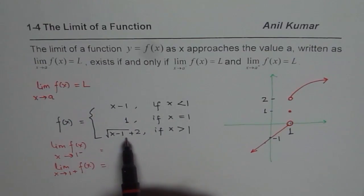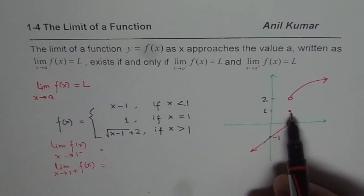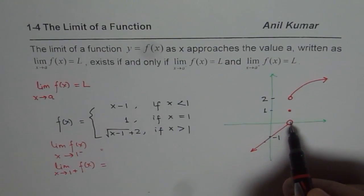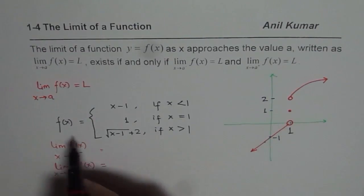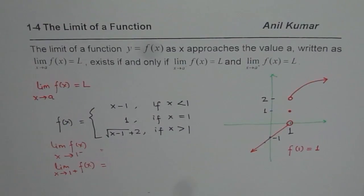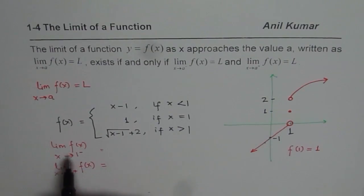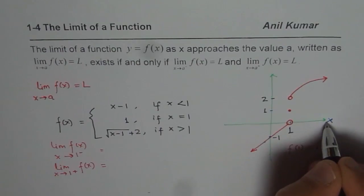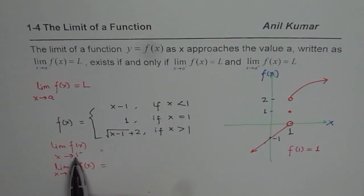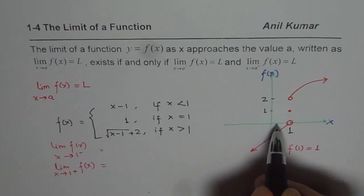We have three different pieces tied together to form the function, and at each and every point it passes the vertical line test. Even at x equals 1 it has a value — the value is 1. So f of 1 equals 1. Now what we need to understand is: what is the limit of the function when x is approaching 1? The x-axis is x and the vertical axis is f of x. When x is approaching 1 from the negative side, the x value is coming closer and closer to 1 from the left side.